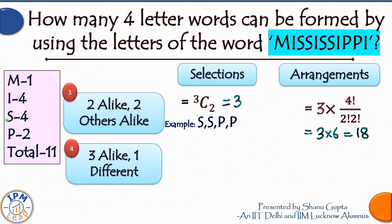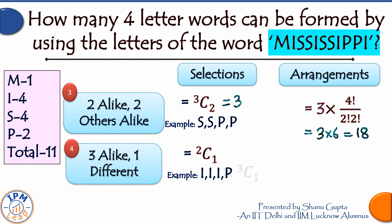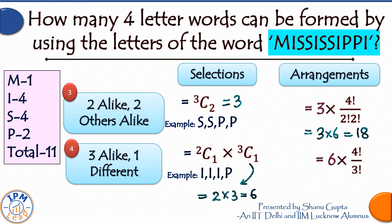Case 4: three letters alike and one different. Two letters have four units each (I and S), so we select one of them in 2C1 ways and draw three units — say three I's. We choose the one different letter from M, S, or P in 3C1 ways. Total selections = 2 × 3 = 6. These four letters (three alike) can be arranged in 4!/3! = 4 ways. Together: 6 × 4 = 24 ways.